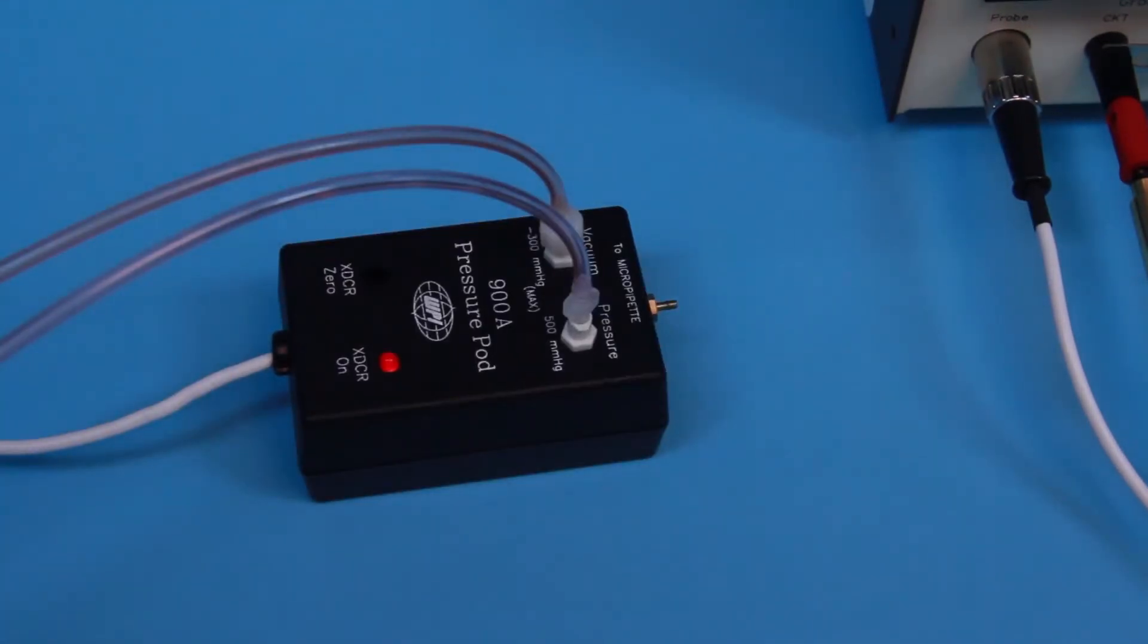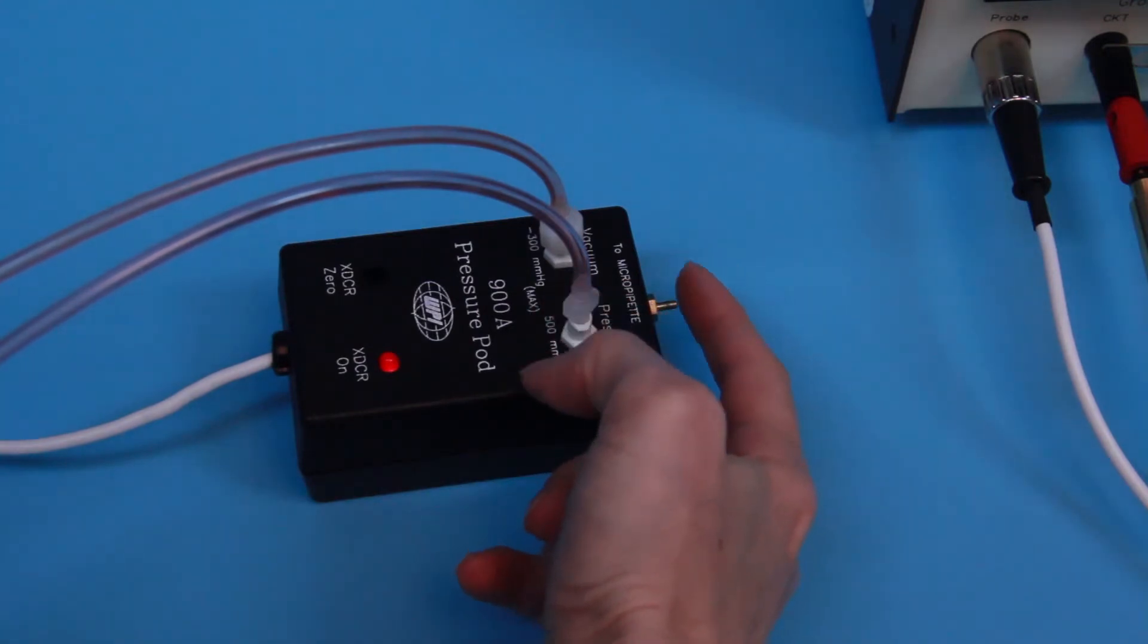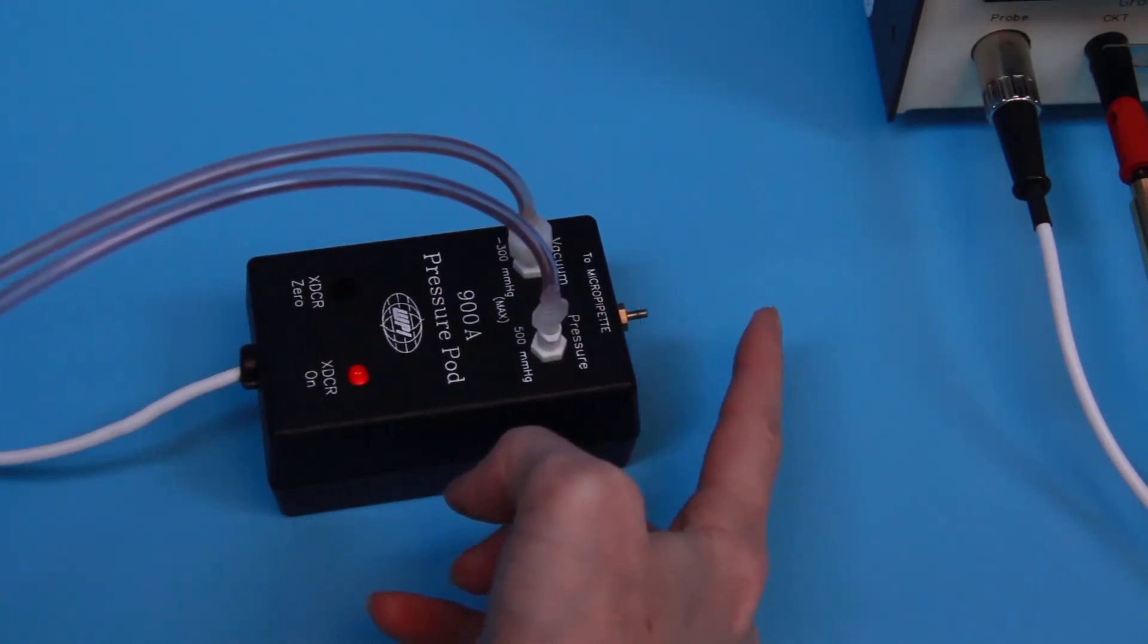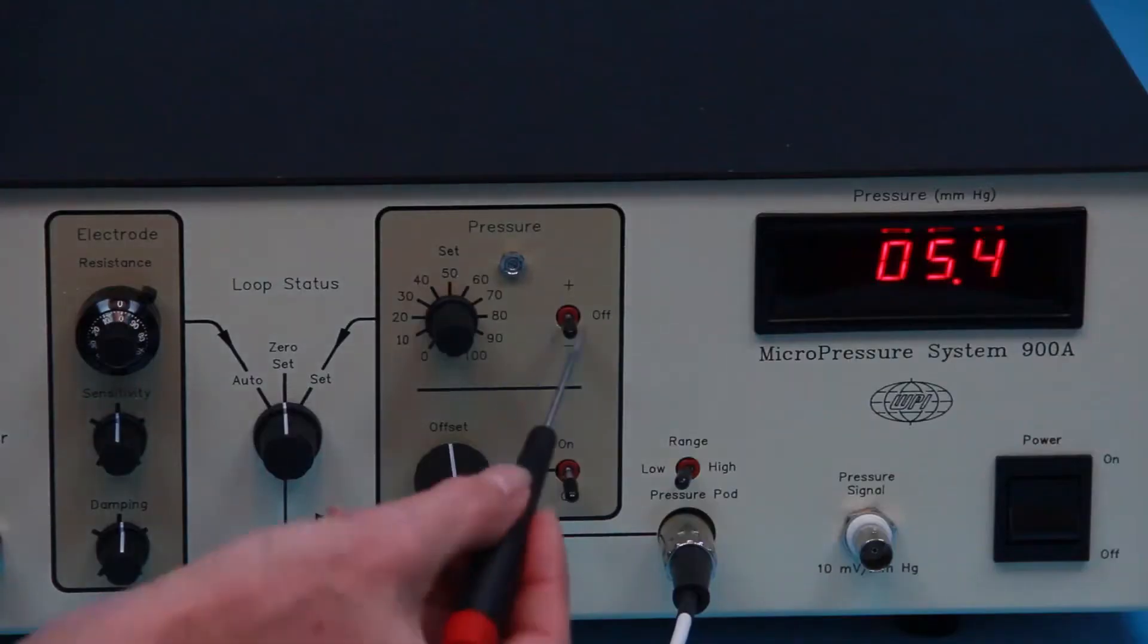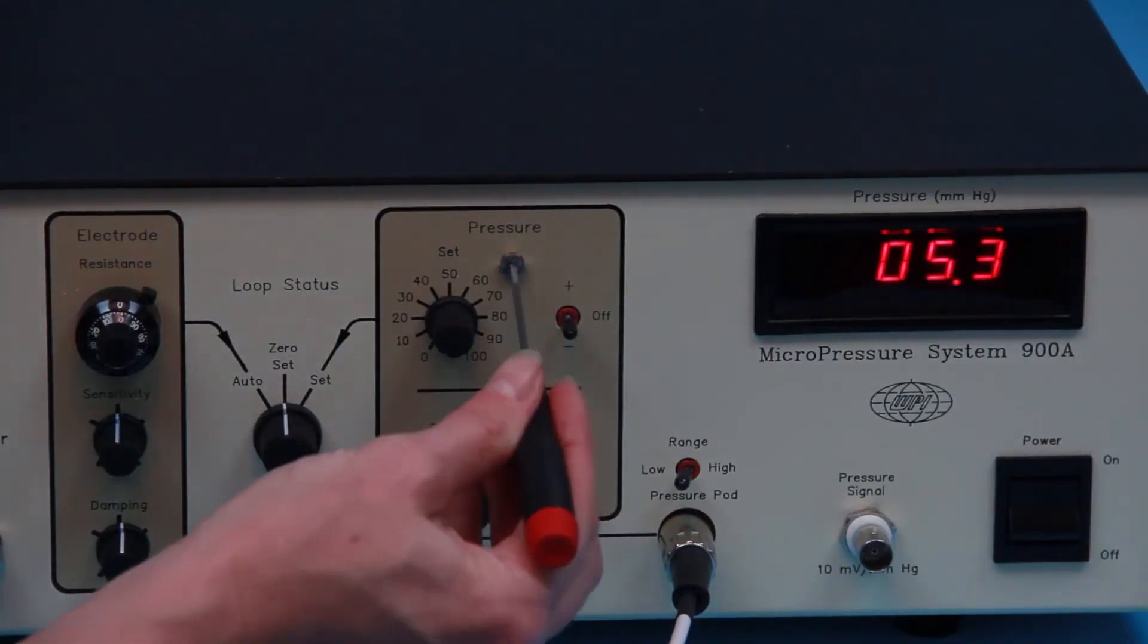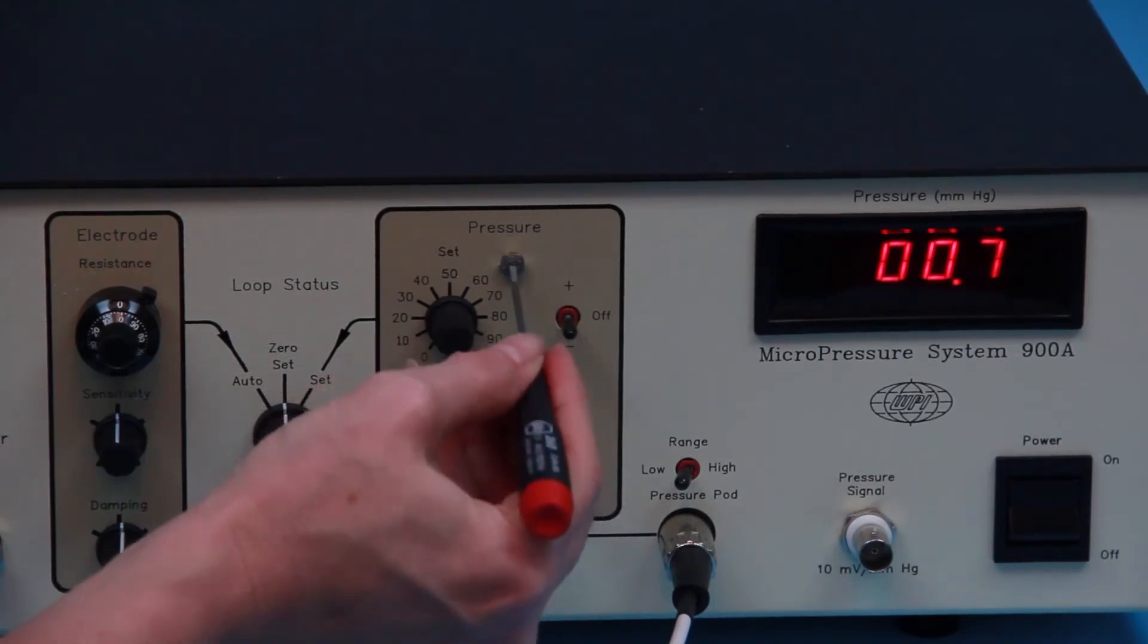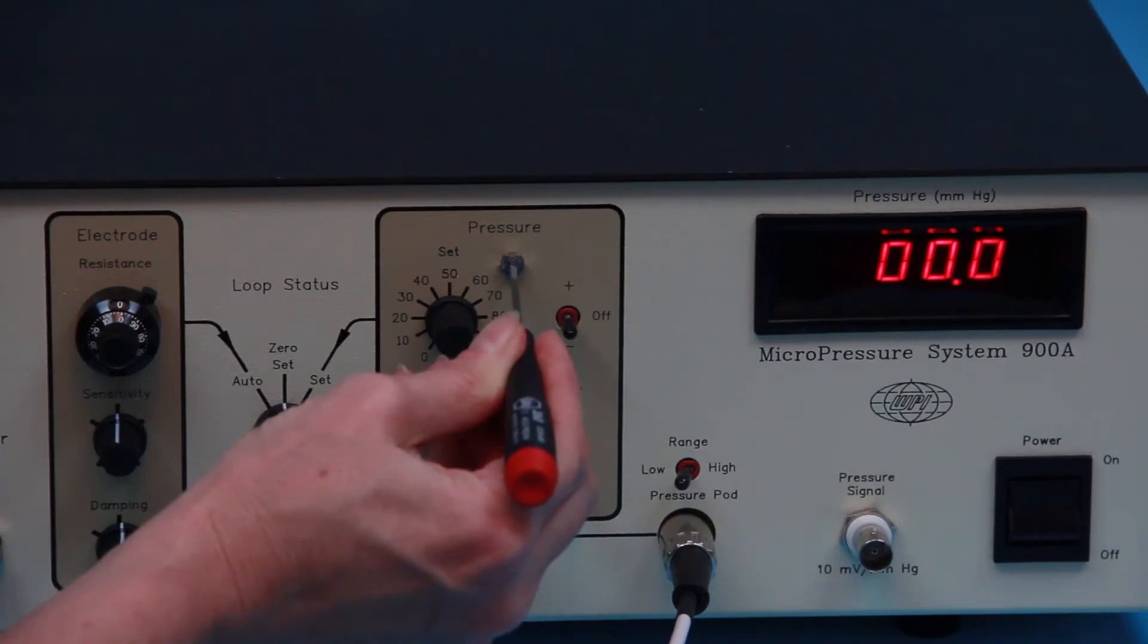Block the 2 micro pipette port on the pressure pod. A finger can be used for this operation if it's held firmly against the port opening. While the port is blocked, insert a screwdriver into the recess marked pressure on the 900A front panel and turn clockwise or counterclockwise until the digital meter reads zero millimeters of mercury.